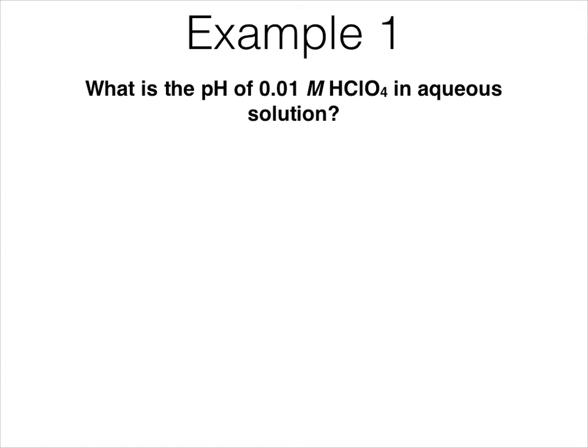So in our first example, we want to figure out what is the pH of a 0.01 molar HClO4 aqueous solution. So this means that HClO4 is dissolved in water. That is what aqueous means. So the first thing, step one, is that we have to identify what kind of species HClO4 is.